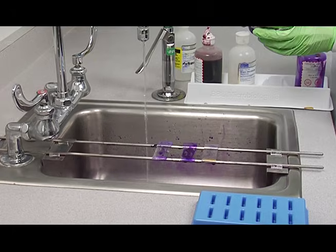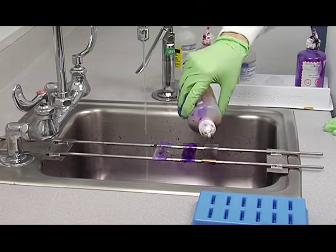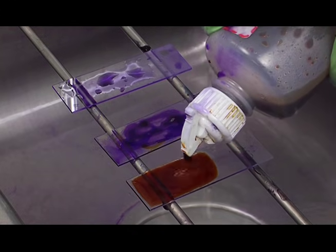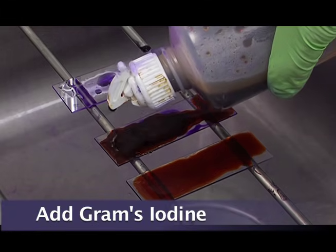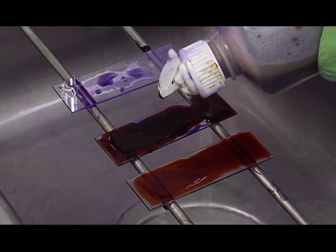Now we're going to add the Gram's iodine. And this fixes the crystal violet in the cells.